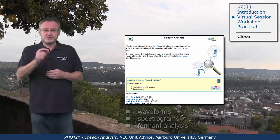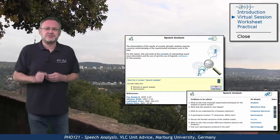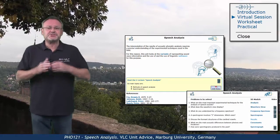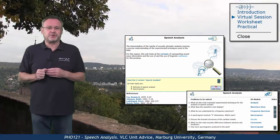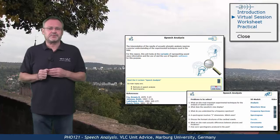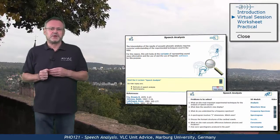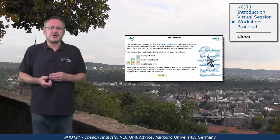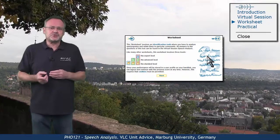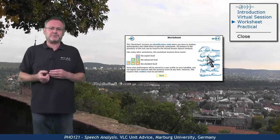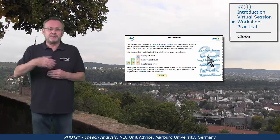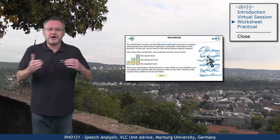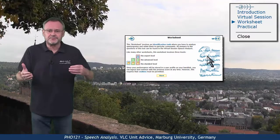Use the question sheet with its hyperlinks and its video links if you want support. The mastery worksheet is an identification task where you have to associate formant patterns with places and manners of articulation.